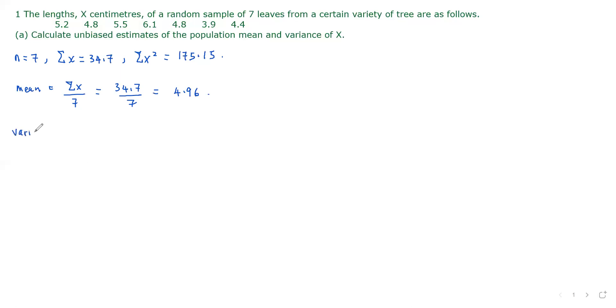The unbiased estimate of the population variance, you can actually use this formula in the formula sheet. So, sum of x squared minus the square of the sum of x over n. n is 7, 1 over 6 here. Sum of x squared is 175.15 minus the square of the sum of x. We have 34.7 squared over 7, and this comes to 0.523. That will give us the unbiased estimates of the population mean and the population variance of x.